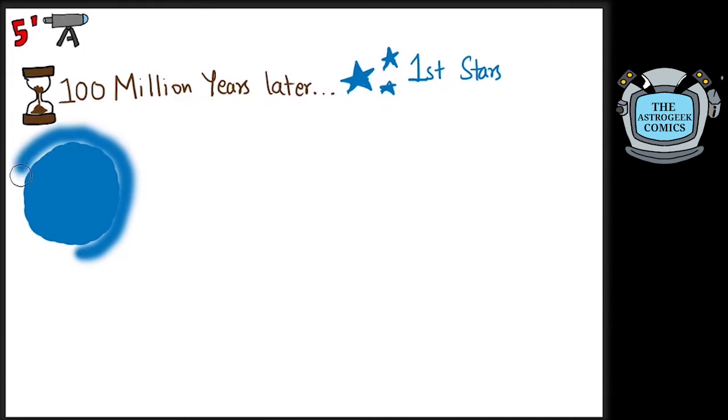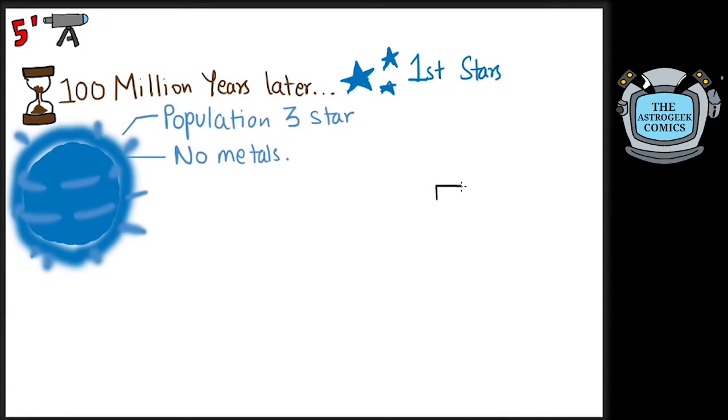These are called population 3 stars. These stars were completely devoid of metal and only contained hydrogen and helium, the simplest elements.